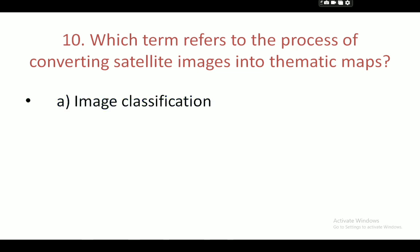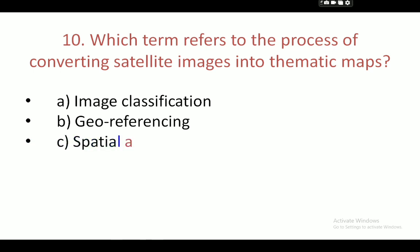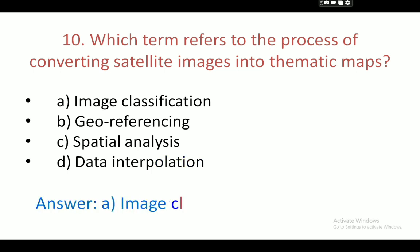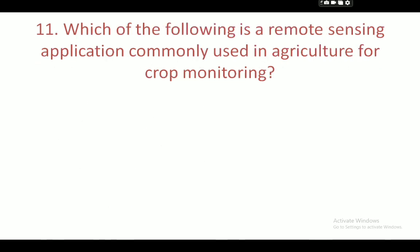Next question: which process involves converting satellite images into thematic maps? Your options are: image classification, geo-referencing, spectral analysis, and data interpolation. Your correct answer is image classification.